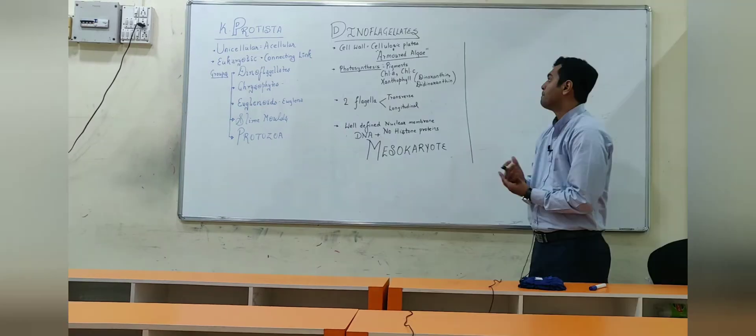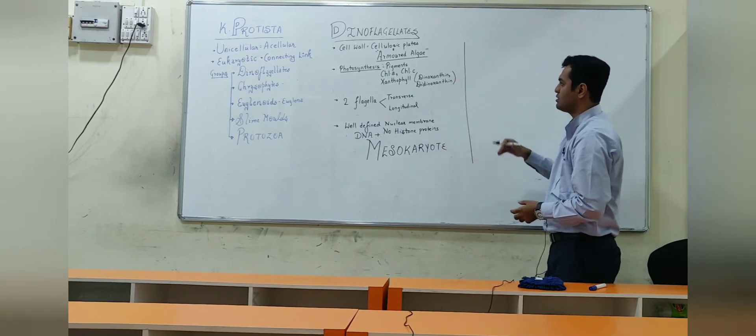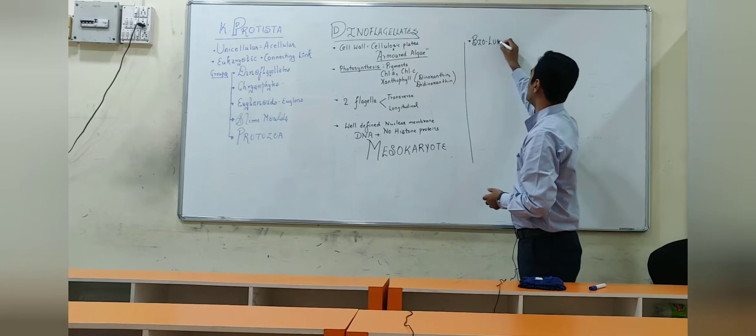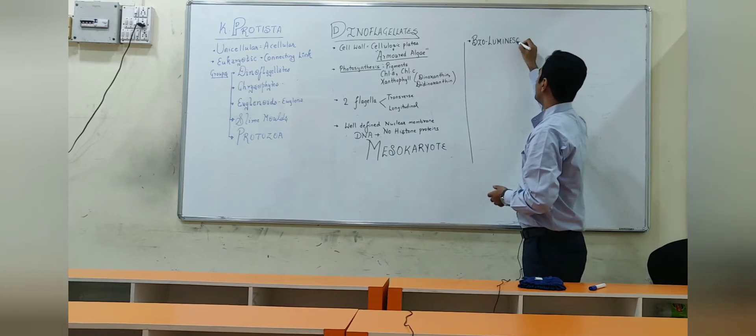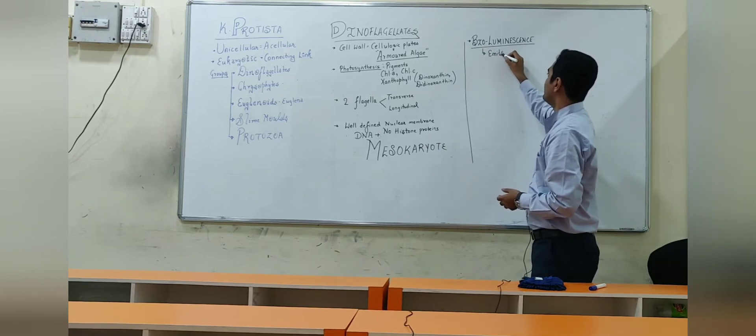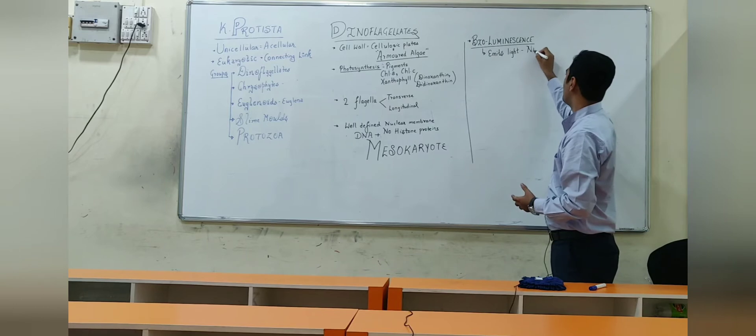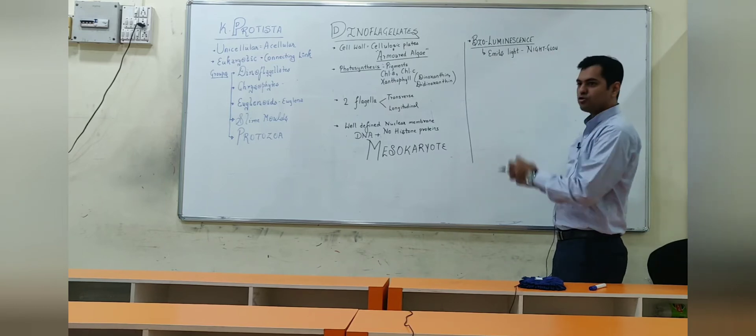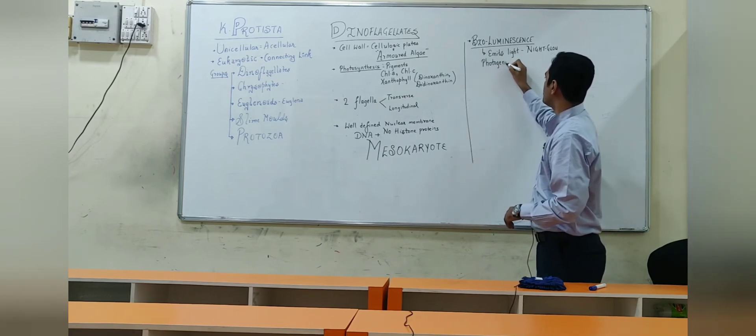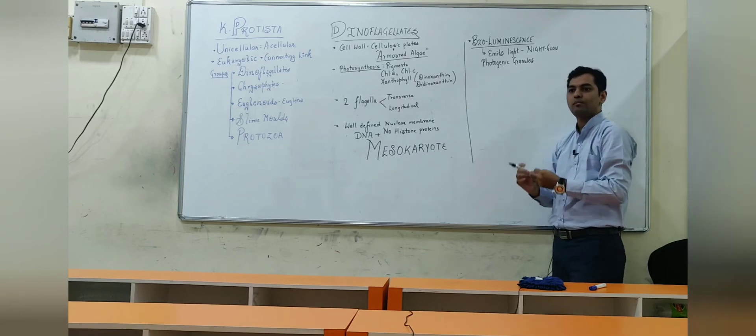Plus their unique characteristics. Another feature observed in dinoflagellates is that they exhibit the property of bioluminescence. Bioluminescence means they emit light. So it emits light, or it glows in the night. For this it is also called night glow. And this is possible because in their cytoplasm there is presence of certain photogenic granules. And these photogenic granules will receive light and reflect it. So they show bioluminescence.